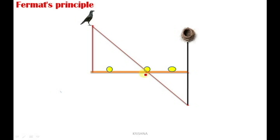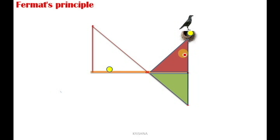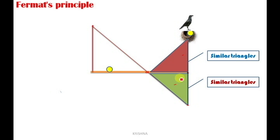This is explained by Fermat, who was a great mathematician. He explained this principle with the help of triangle laws. The crow takes that grain and moves towards the nest. These two triangles formed are similar triangles, and their sides are equal. That is why, where the straight line intersects, the crow should choose that food grain. Because these sides are equal, this height and corresponding side are equal.